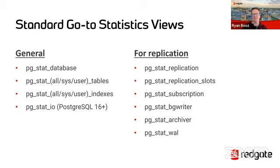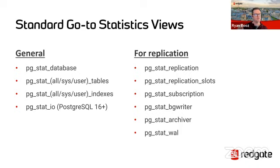We're going to talk briefly about stat_io, a new view added in Postgres 16 representing a couple years of work by a number of companies. It helps you see what's the impact of queries at the IO level of the server, which can really help you understand queries that are not just slow but are actually having a measurable impact at the IO level.